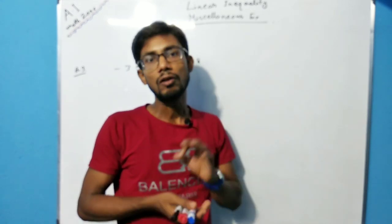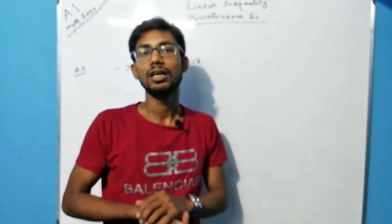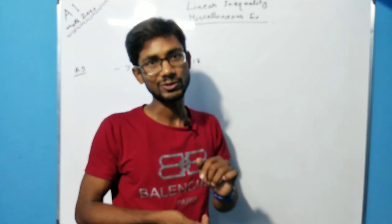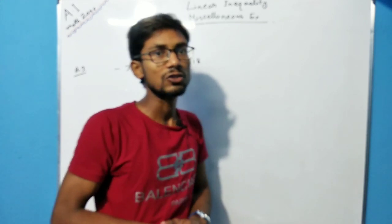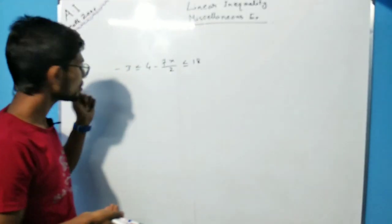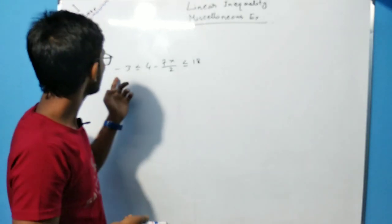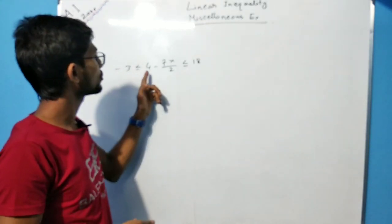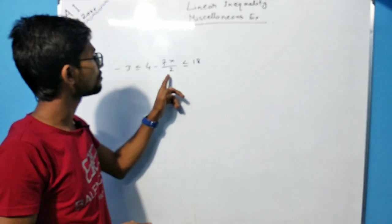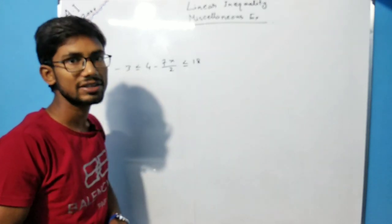I will solve a few questions and you have to try yourself the remaining questions. The first question is question number 3: minus 3 is less than or equals to 4 minus 7x by 2, less than or equals to 18.